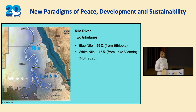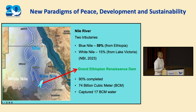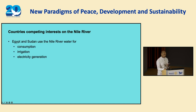This river became a source of conflict for the three countries when Ethiopia announced the construction of the Grand Ethiopian Renaissance Dam in 2011. This dam is still under construction and has reached 90% completion. When completed, it will have a total water holding capacity of 74 billion cubic meters. As of now, it has captured 17 billion cubic meters through three rounds of water filling.